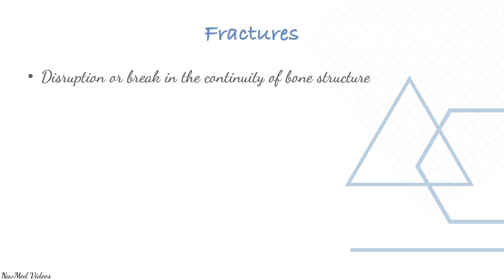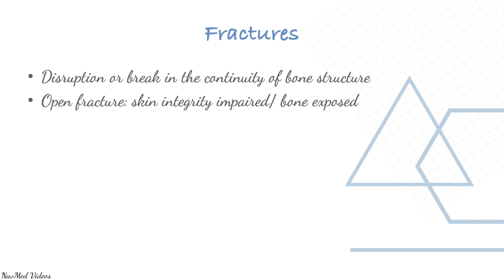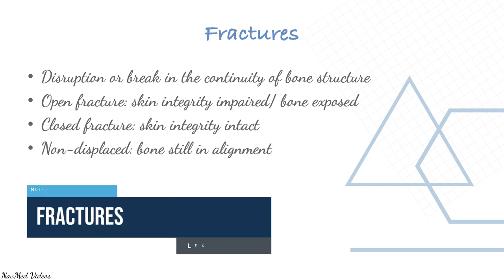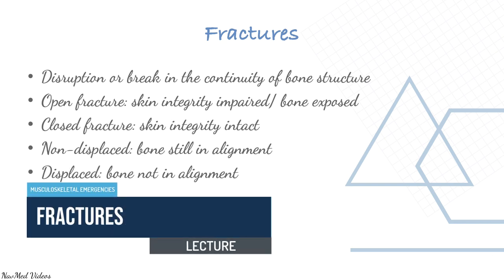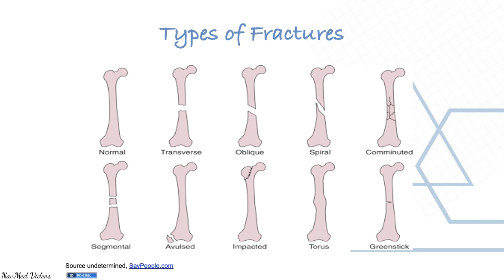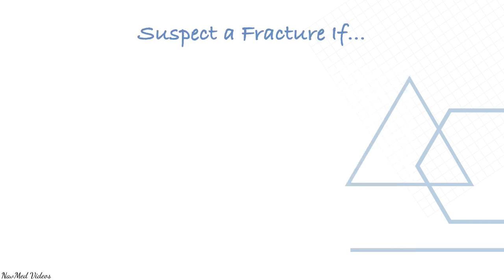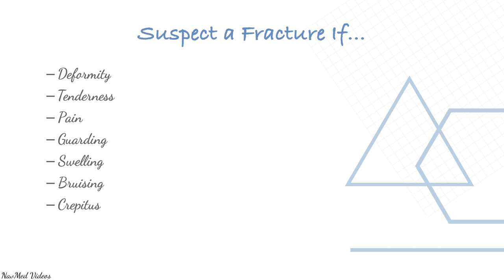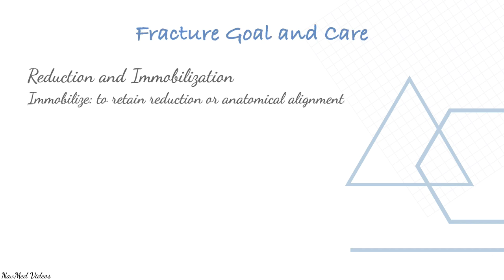A fracture is a disruption or break in the continuity of bone. An open fracture means skin continuity is impaired; a closed fracture means skin is intact. Non-displaced means bone is still aligned; displaced means bone is not aligned. Types of fractures include transverse, oblique, spiral, comminuted, segmental, avulsion, impacted, torus, and greenstick. Suspect a fracture when there is deformity, tenderness, pain, guarding, swelling, bruising, crepitus, or exposed fragments; verify with X-ray.